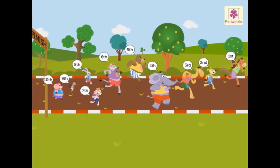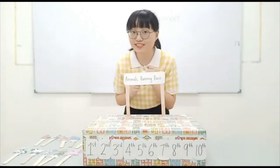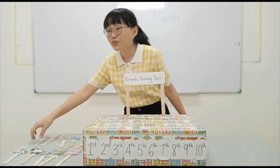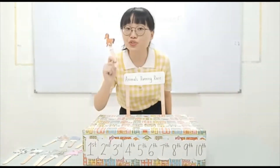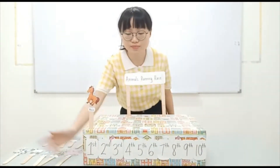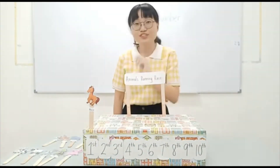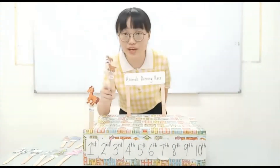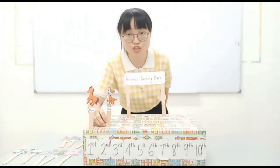With this, the race ends. Can you tell me who runs the fastest? Yeah, you are right! The horse is running the fastest, so the horse is at the first position. Who is the second one? Good job! The dog is running quite fast, so the dog is at the second position.